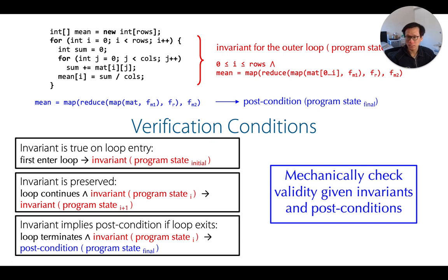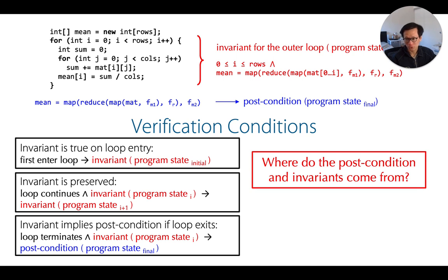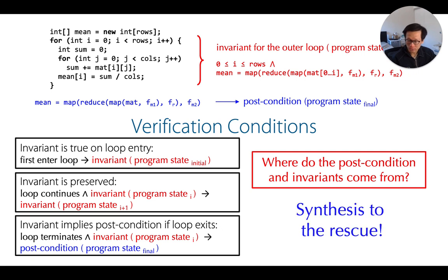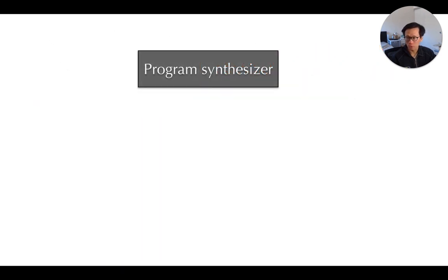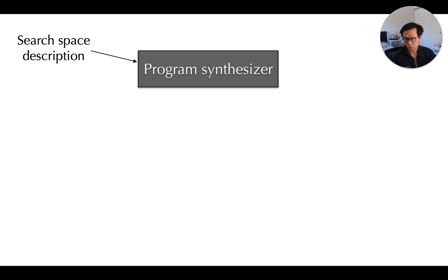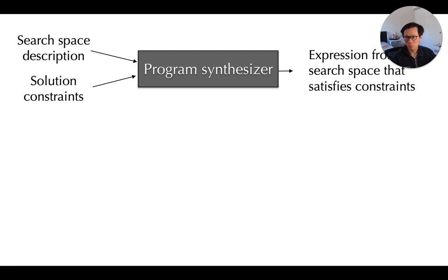The million-dollar question is: how do we come up with these post-conditions and invariants? This is exactly where program synthesis comes into play. A synthesizer takes in two things as inputs: a description of the search space, and a bunch of constraints that describe what is a valid solution. Given these two inputs, it will come up with expressions from the search space that satisfy the constraints we provided.